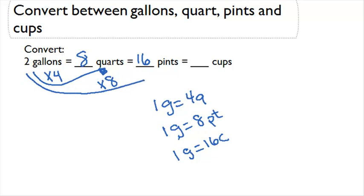Now let's work on cups. We can see from our formula that one gallon is equal to 16 cups, but we have two gallons, so we're going to have to multiply. So now we're multiplying our two gallons by 16 to find that two gallons is the same thing as 32 cups.